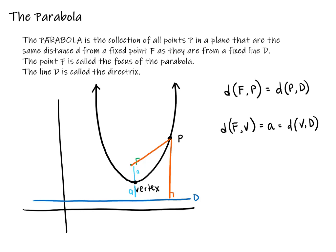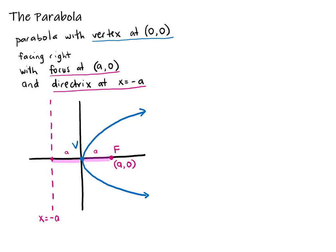Let's start with parabolas where the vertex is at the origin. Our first image is of a parabola facing right, with the vertex at the origin. The focus is at (A, 0) and our directrix is at x equals negative A. Our A is always positive, as it is the distance from the vertex to the focus and also the distance from the vertex to the directrix. For a sideways-facing parabola, the equation is y² = 4Ax.